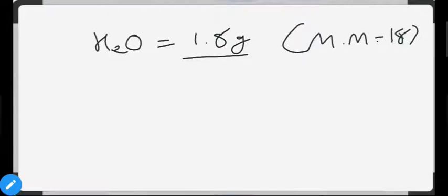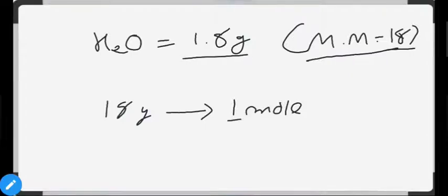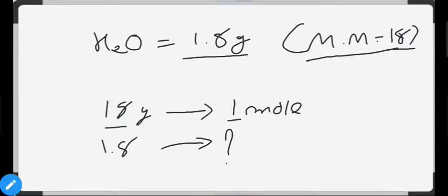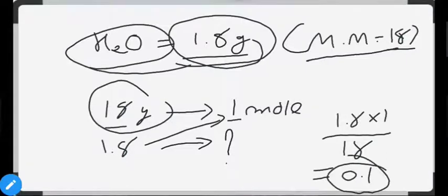How many moles are present in 1.8 grams of H₂O? All you have to do is use cross multiplication. If 18 grams of H₂O equals one mole, then the molecular mass represents the weight of one mole. So 18 grams equals 1 mole. Given quantity is 1.8, so cross multiply: 1.8 multiplied by 1 divided by 18, which gives 0.1 moles.